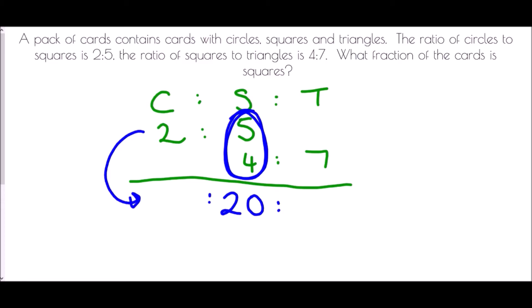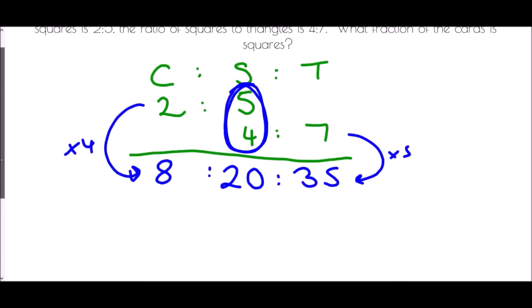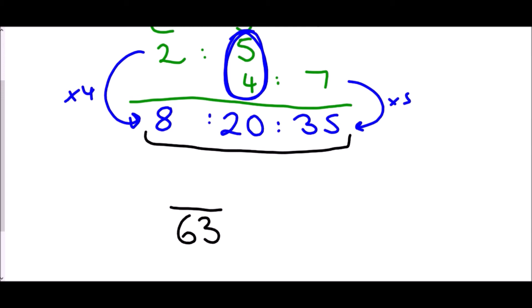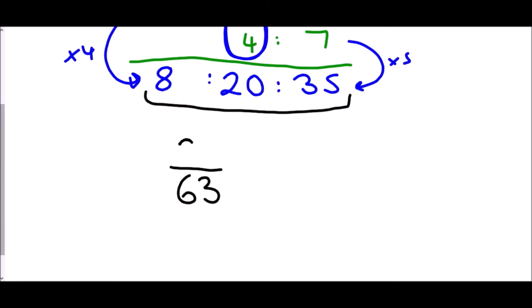How did I turn 5 into 20? I multiplied by 4, so 2 times 4 is 8. In the second ratio, how did I turn 4 into 20? I multiplied by 5, and so that gives me 35. The combined ratio is 8 to 20 to 35. The question was what fraction of the cards is squares? We need to know how many parts in total: 8 plus 20 plus 35 is 63 pieces. Squares is the middle value, so the fraction of squares is 20 out of 63.